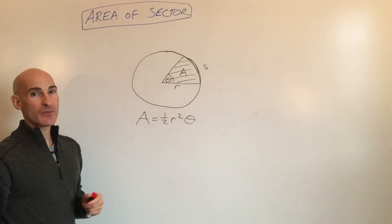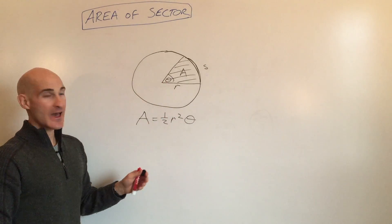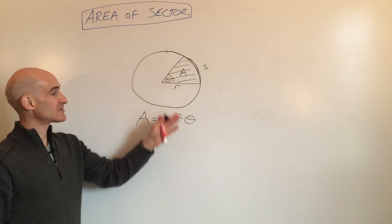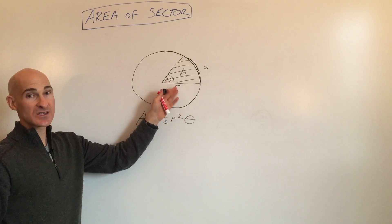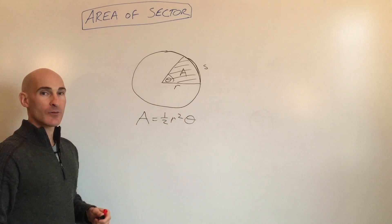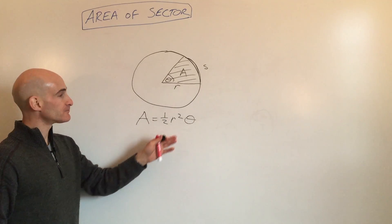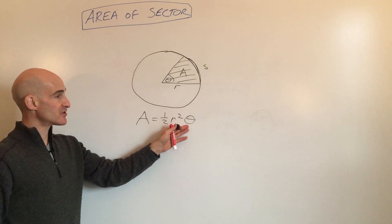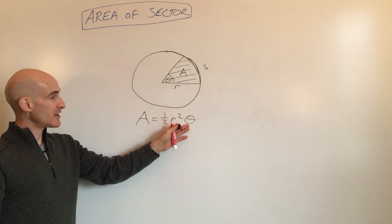Now, the thing you want to remember is that theta has to be in radians. So the central angle has to be in radians. So if they give it to you in degrees, convert it to radians. If you need help with that, refer to one of my previous videos about converting the units from degrees to radians, radians to degrees. And you want to make sure this is in radians.